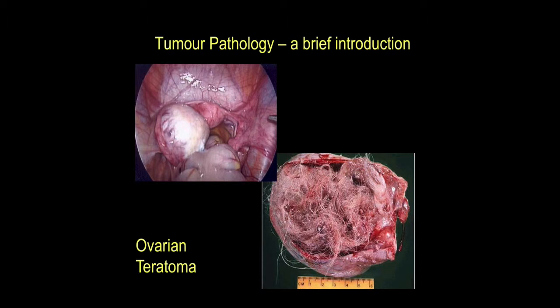It's interesting to compare the ovarian teratoma with the testicular teratoma — its counterpart in the male — as they behave in very different fashion. Whereas an ovarian teratoma tends by and large to be a benign lesion, the testicular teratoma unfortunately has a range of behaviors and will often have a malignant potential. Pathology is truly a fascinating subject — very unpredictable.